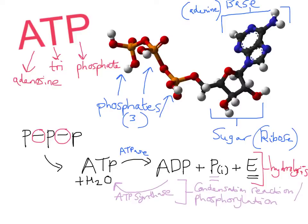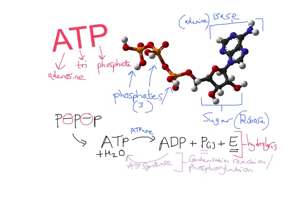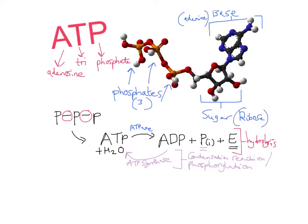So to summarize: we've said what ATP stands for, looked at the molecular structure, noted that bonds between phosphates are unstable, and shown that ATP breaks down to ADP plus inorganic phosphate plus energy in a hydrolysis reaction, with the reverse being a condensation reaction. Now let's talk about how we can make ATP — there are three ways — and then why it's a good immediate source of energy.